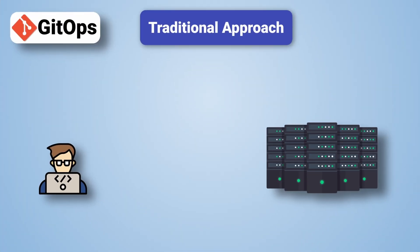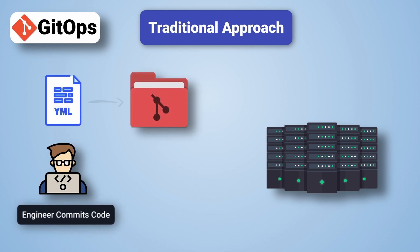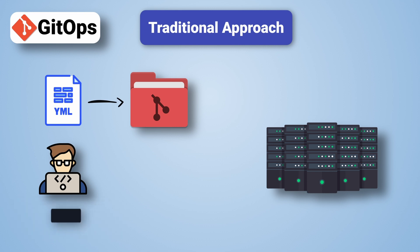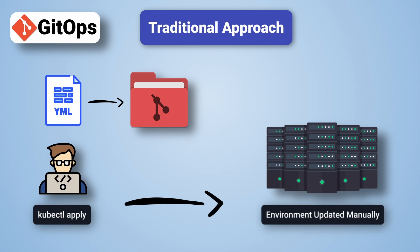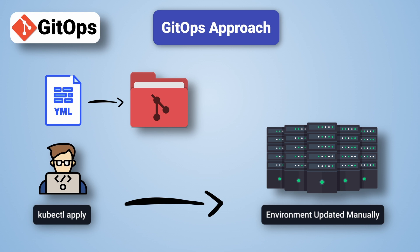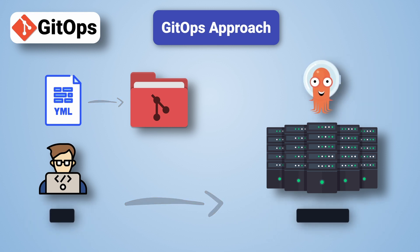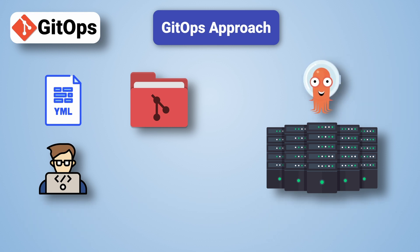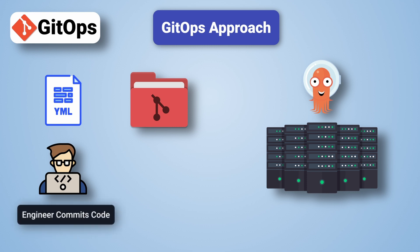Traditionally, in a non-GitOps workflow, when these tools were used, an engineer would typically write the infrastructure files and commit them to a Git repository. Once the code was committed, the engineer would then manually apply the changes to the infrastructure. In a GitOps approach, this last step is automated by what's known as a GitOps operator. With a GitOps operator like Argo CD or Flux, once code is committed to a repository, that infrastructure is automatically synced to match what's in Git.